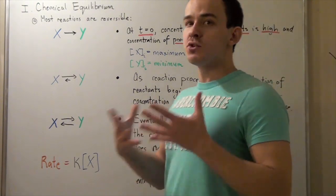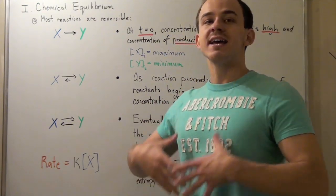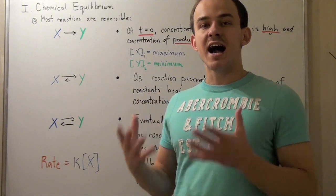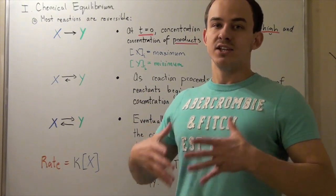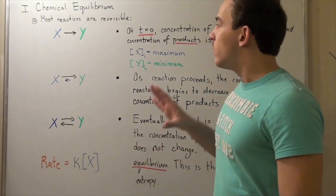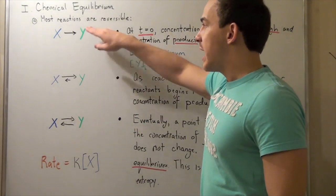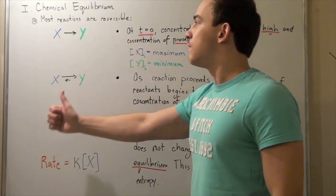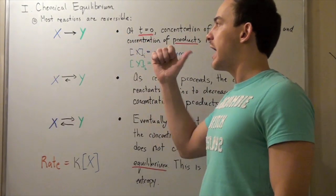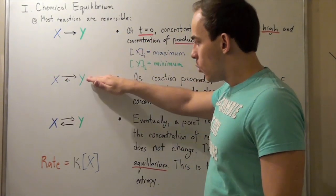This is the point of greatest entropy. In other words, the entropy of our system is at its highest at equilibrium. Now let's look at the rates of the reactions — the forward reaction and the reverse reaction at each point.